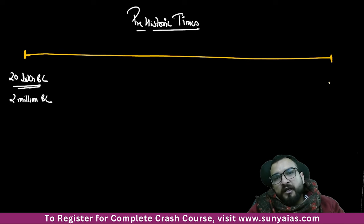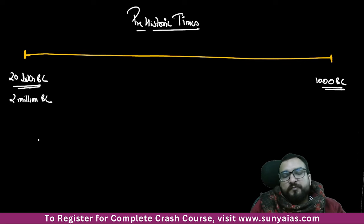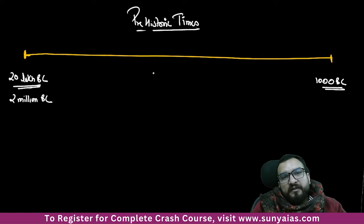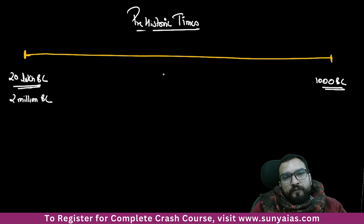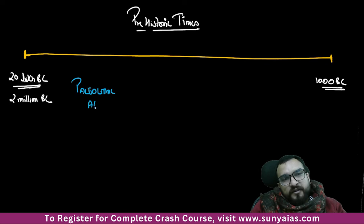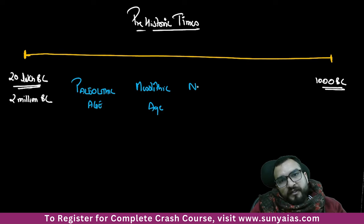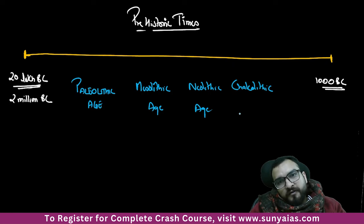We are starting from 2 million BCE. Prehistoric times will go from here to 1000 BC. We will understand prehistoric times under certain topics: Paleolithic Age, Mesolithic Age, Neolithic Age, Chalcolithic Age, and Megalithic Age.